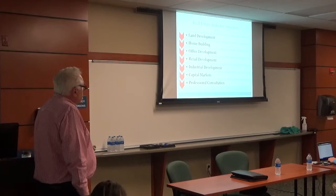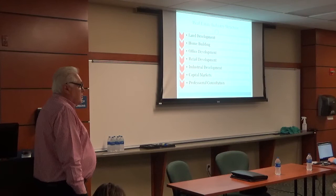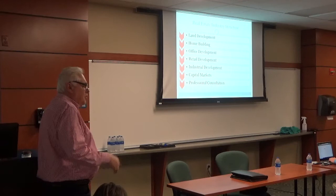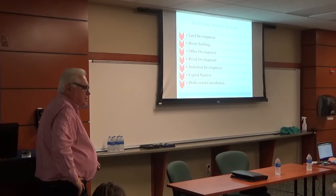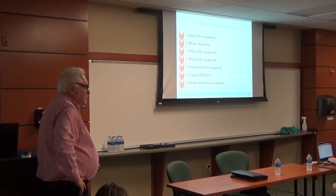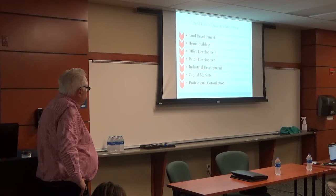I broke the real estate industry down into seven components: land development, home building, office development, retail development, industrial development, capital markets, and professional consultation. Immediately we can see that in aiming at what you want to do in real estate, you're going to have to target one or two of these, because you can't target all seven. You'll be a master of all and a genius of none.